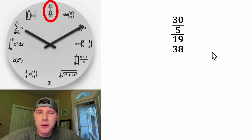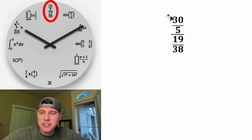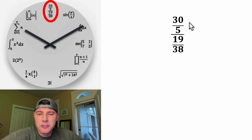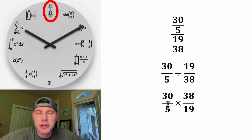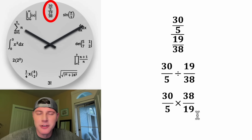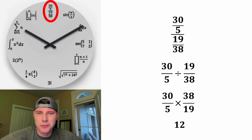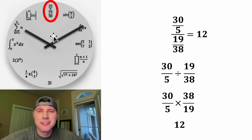Now we're on to the last one. These are called complex fractions — also known as compound fractions, nested fractions, or double fractions. It ultimately means this fraction divided by this fraction. When dividing fractions, that's the same as multiplying by the reciprocal of the second one — keep, change, flip. So we have 30 over 5 times 38 over 19. 30 over 5 simplifies to 6, and 38 over 19 simplifies to 2. 6 times 2 equals 12. So this compound fraction is equal to 12, and that's why it's in the 12 o'clock spot.